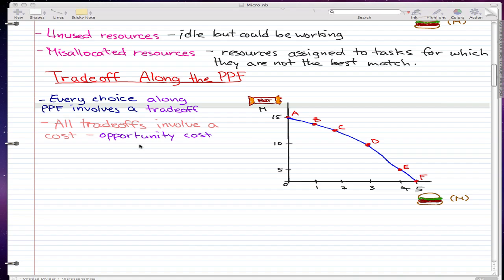In this video we're going to talk about the trade-off along the PPF. Now every choice along the PPF curve involves a trade-off. On a real-world PPF we can only produce more of one good or service only if we produce less of some other good or service. So if you want to produce more burgers then we have to produce less bars.